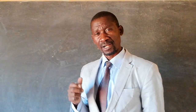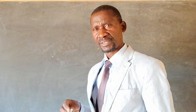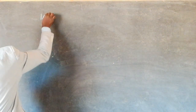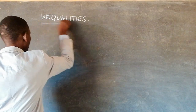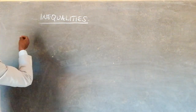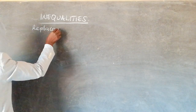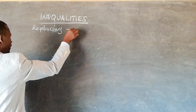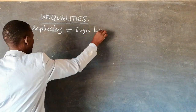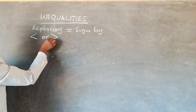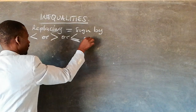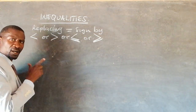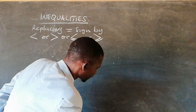Let me start by explaining what inequalities mean. Inequalities simply mean replacing the equal sign by one of these signs: less than, greater than, less than or equal to, or greater than or equal to. These signs are said to be the inequalities.